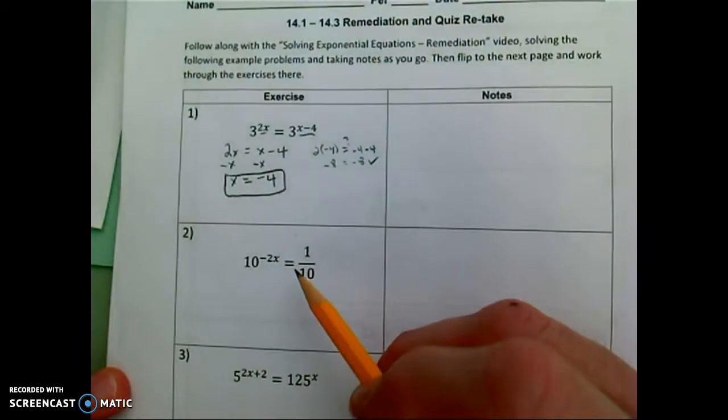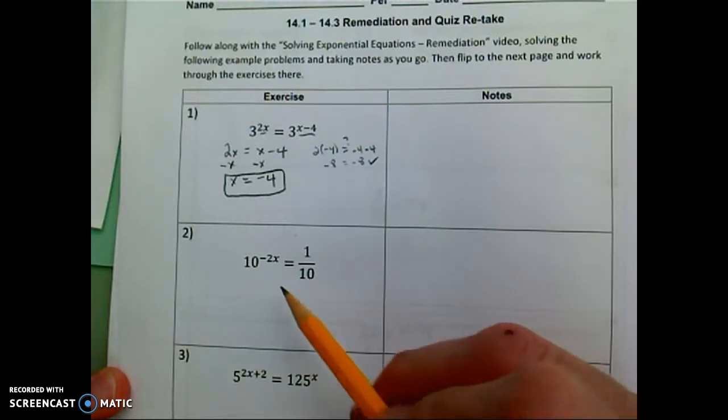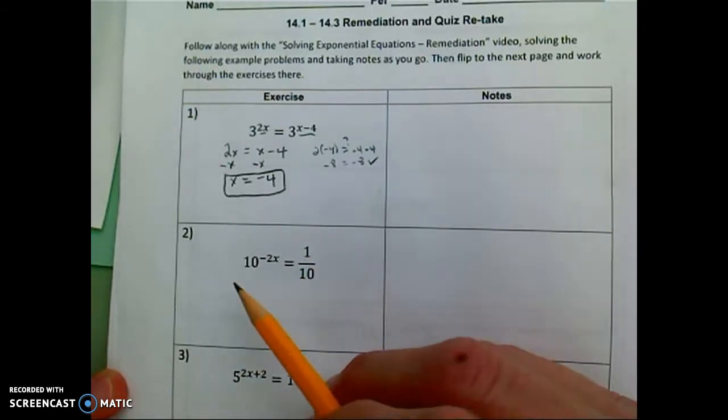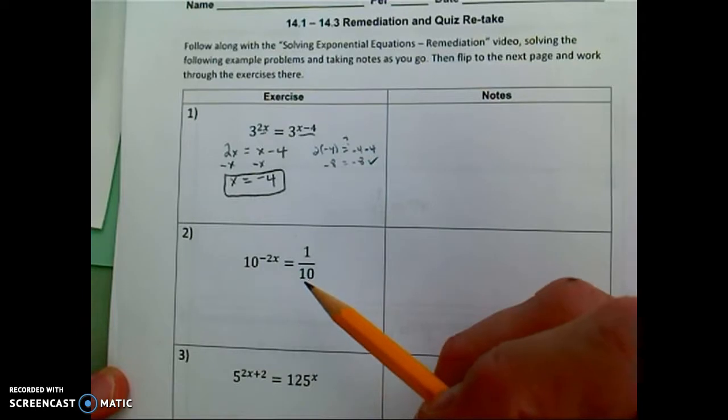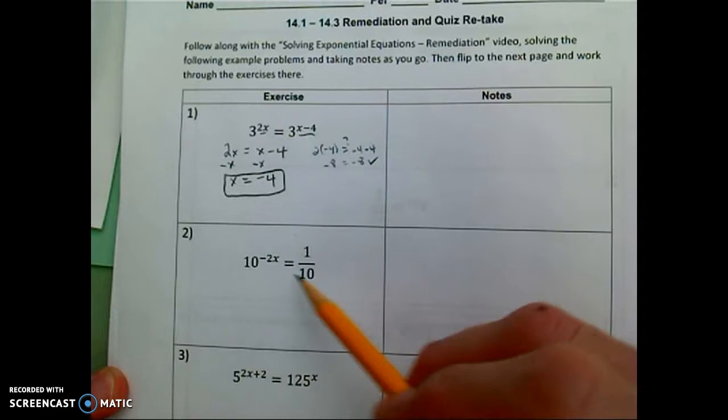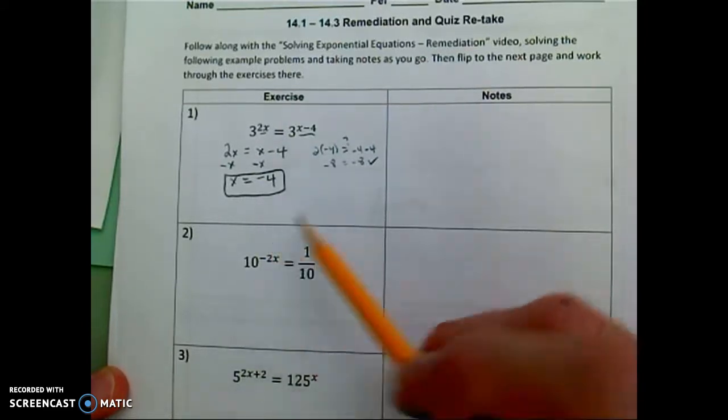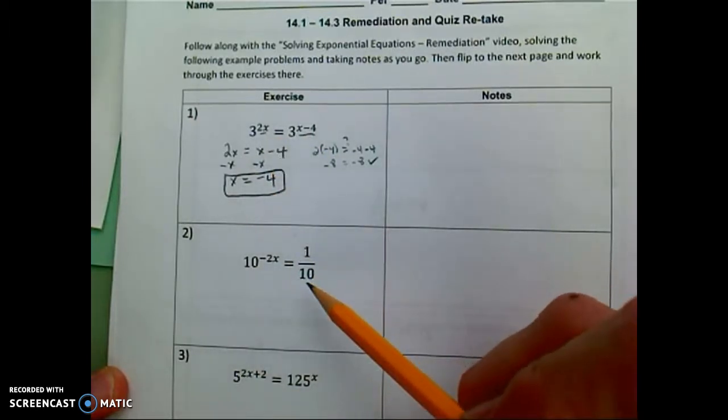Looking at another example. 10 to the negative 2x equals 1 tenth. So in this case I've got an exponential expression on the right hand side. 10 to the negative 2. On the left hand side rather. On the right side just this fraction. So I'm thinking what can I raise 10 to that gives me this value. And I could guess and check and plug things in. Or thinking about how I solve this first equation, I'm going to write 1 tenth in a different form.